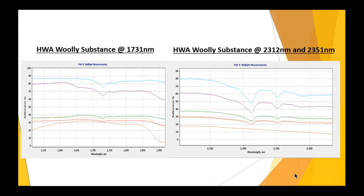Hopefully, looking at other spectral data, this can potentially be a key indicator of the hemlock woolly adelgid and we hope to leverage this type of information going forward. There's a scan right at the bottom that looks smoother than the others — a brown scan line — which is actually the healthy vegetation that does not have any woolly substance, just to illustrate the differences between samples that did and did not have hemlock woolly adelgid present.